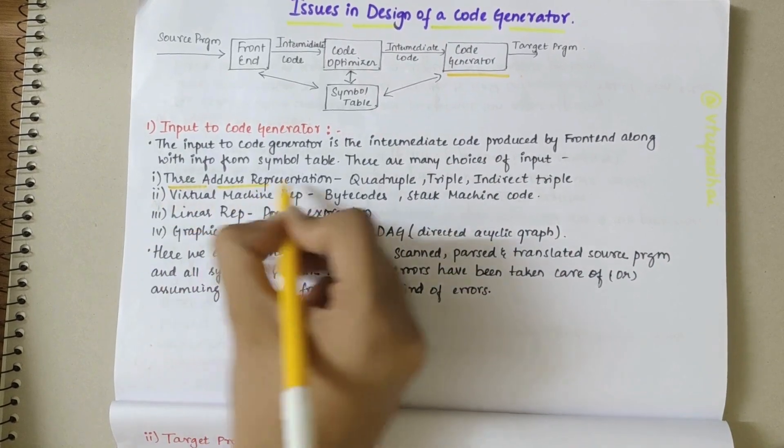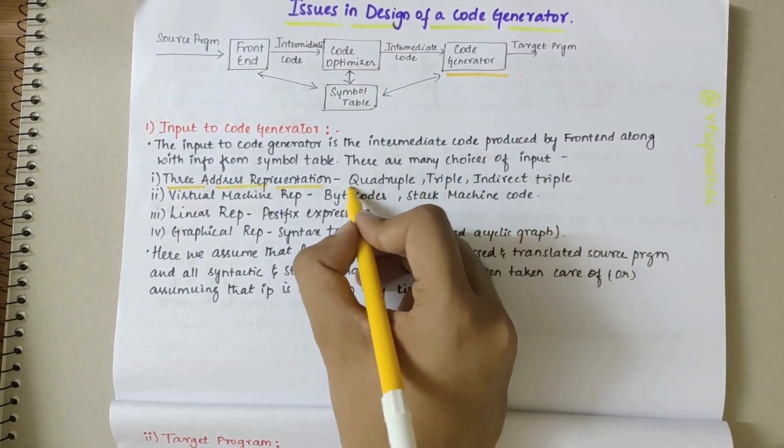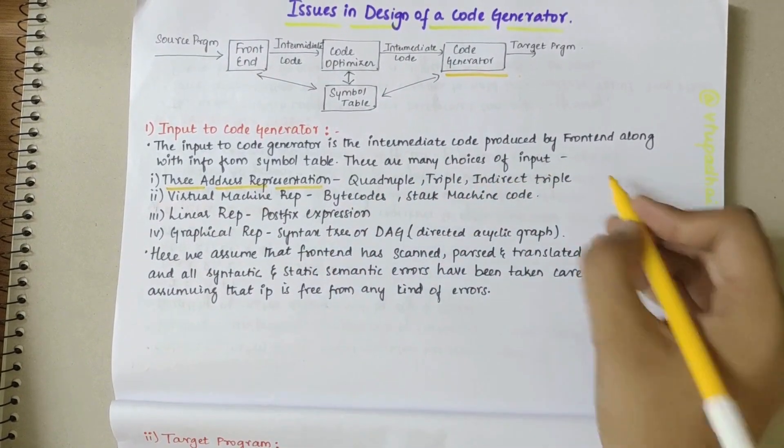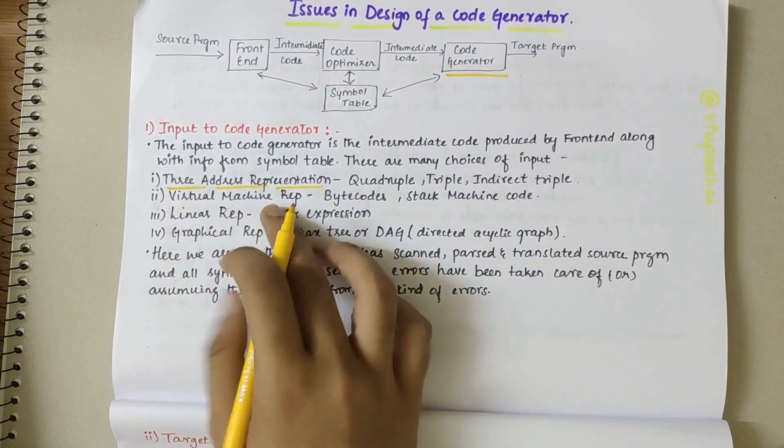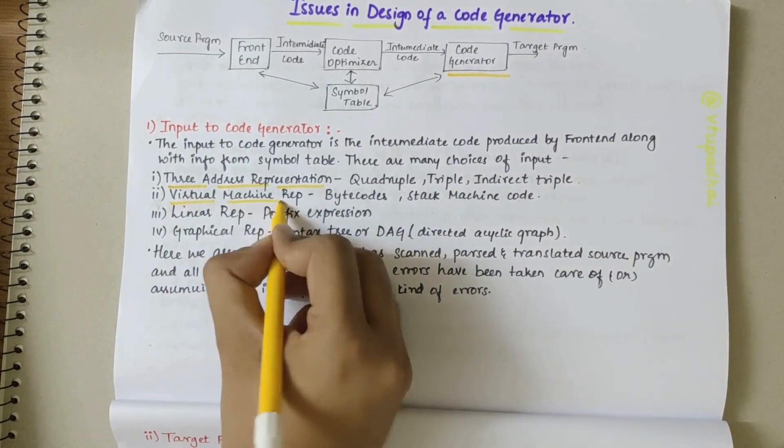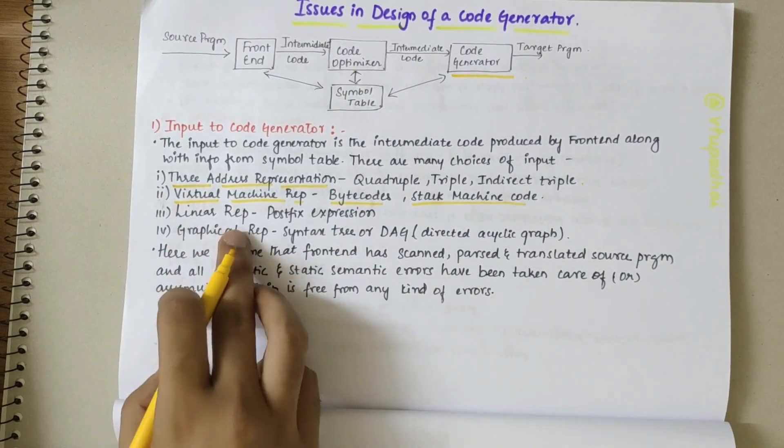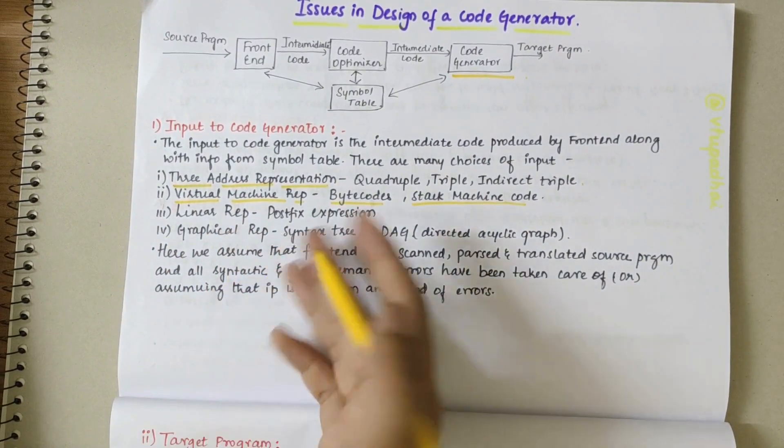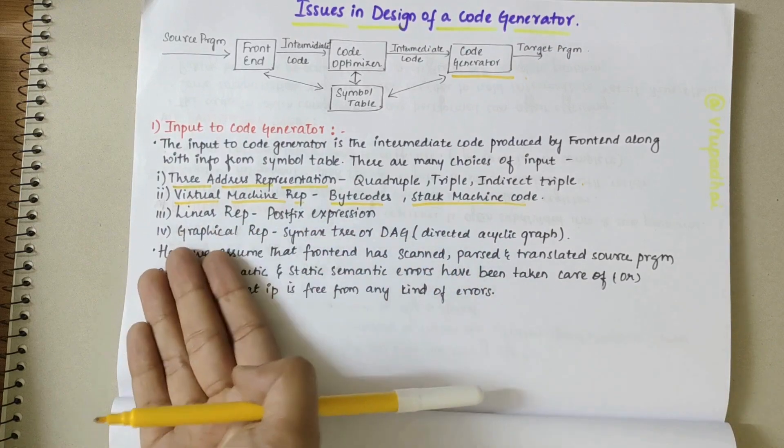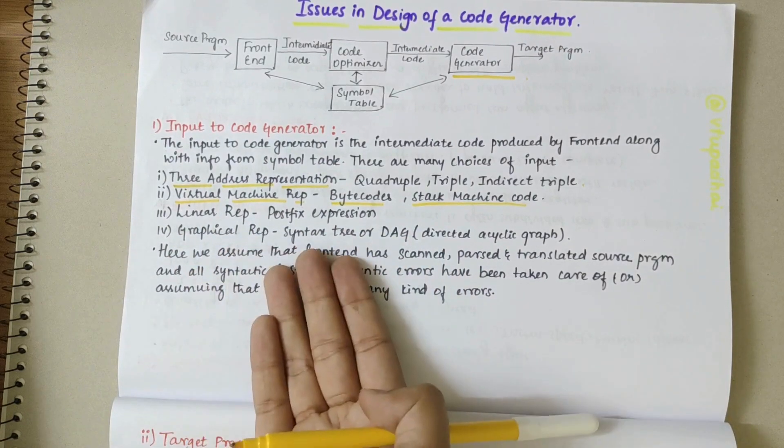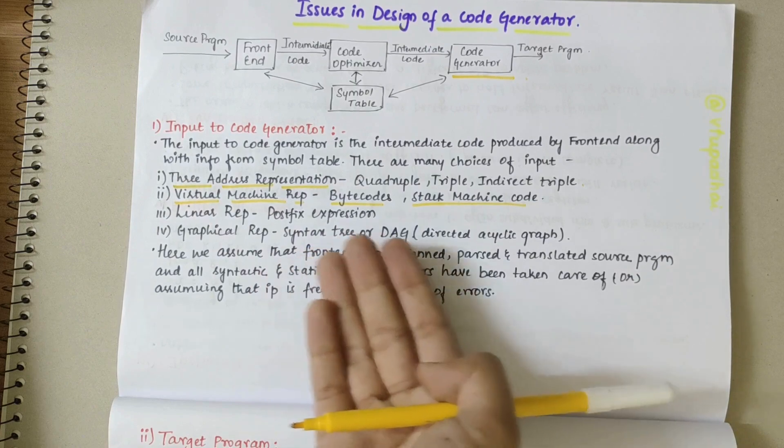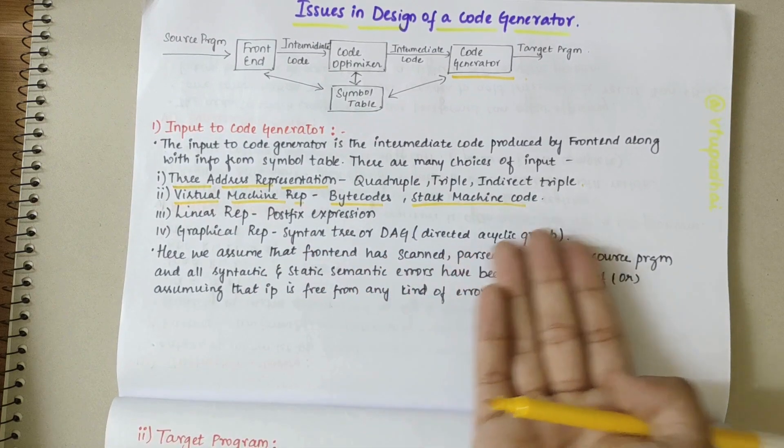It could be a three address representation - quadruple, triple, or indirect triple - or it could be a virtual machine representation - bytecodes or stack machine code - or it could be in linear representation like postfix expression, or it could be in graphical representation like syntax tree or DAG, that is directed acyclic graph.